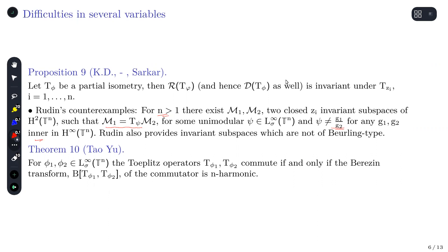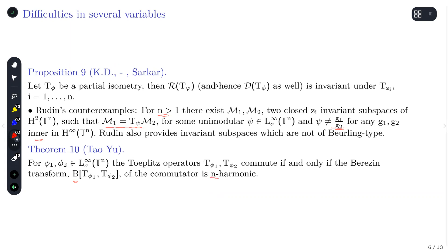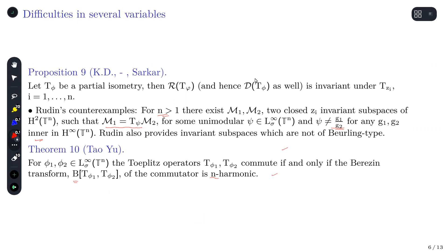The second difficulty is the commutativity criterion for Toeplitz operators. In several variables, the commutant relation becomes more complicated because the Berezin transform of the commutant relation is n-harmonic — harmonic in each coordinate separately — not just harmonic in the usual sense. This requires working with reproducing kernels in the disk, making the whole one-variable approach not directly applicable to the multivariable case.